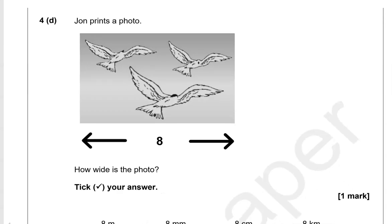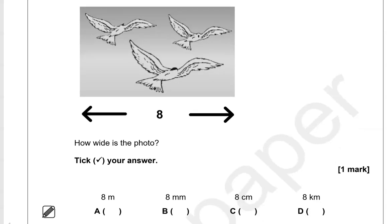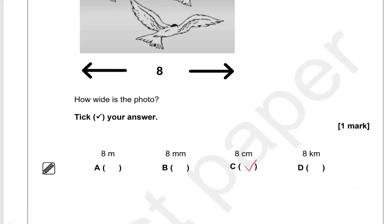John prints a photo. How wide is the photo? Tick your answer. 8 meters. That would be way too long. So a very long room would be 8 meters long. So that wouldn't be the case with a photo. 8 milliliters. That is way too short. About the width of a finger. So that's not correct. 8 centimeters sounds good. 8 kilometers would be way too long. So we'd measure distance between places in kilometers. So option C is the correct one.